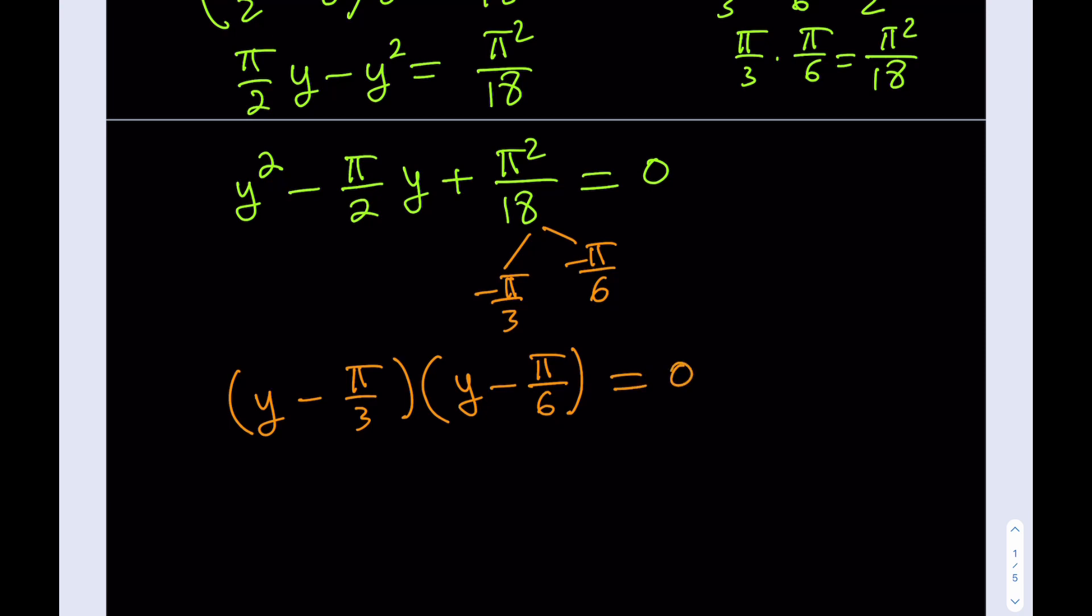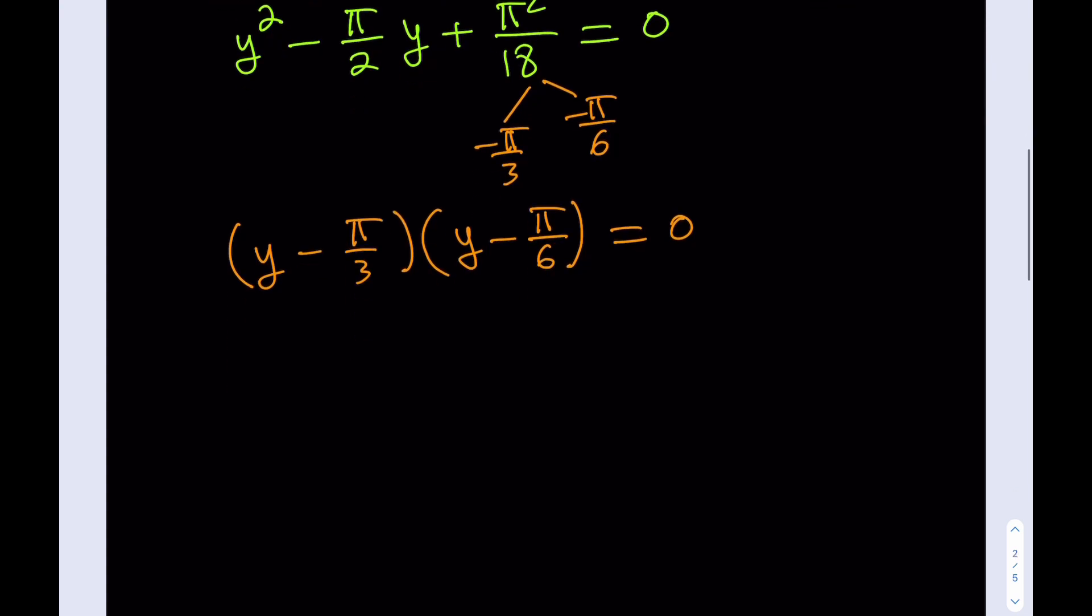Now, can we solve this? Absolutely. By using the zero product property, set each factor equal to 0 and you get y equals pi over 3 and y equals pi over 6. Awesome.